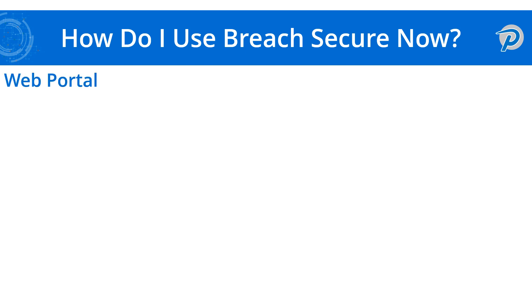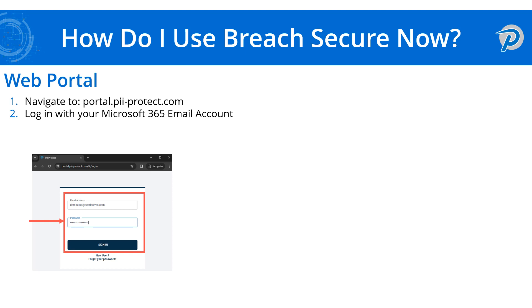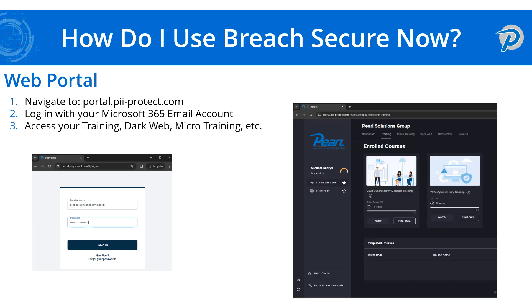Breach Secure Now can also be accessed through a web portal. What you'll first do is navigate to portal.pii-protect.com inside of any browser such as Chrome or Edge. From there, log in with your Microsoft 365 email account. The portal is tied directly to your email account, so there's no different password needed. After you log in, you're going to see a dashboard that looks similar to this. From here, you'll be able to access any training, micro training, or status of dark web notifications related to your account.